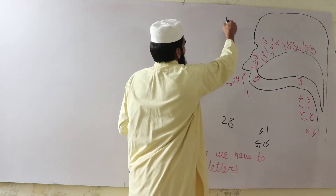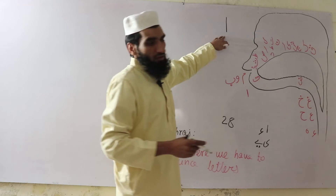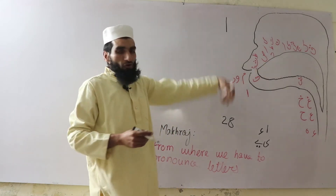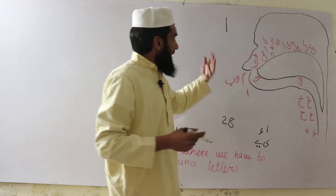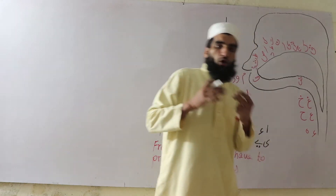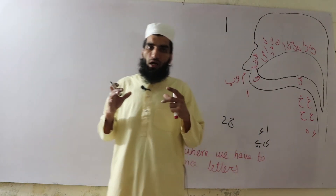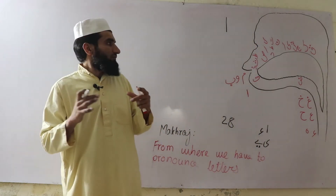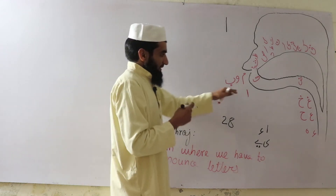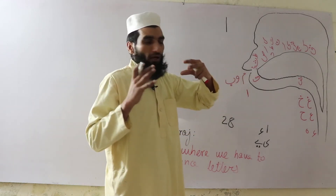First of all, this is Alif — pronounced 'Ah'. We pronounce Alif by opening our mouth wide: Ah. So its Makharaj is the open mouth.